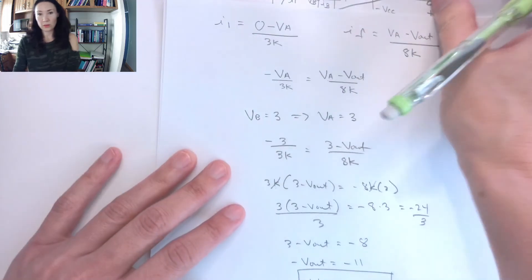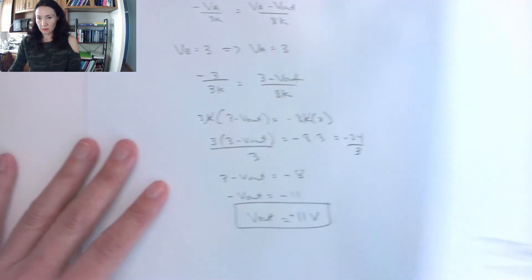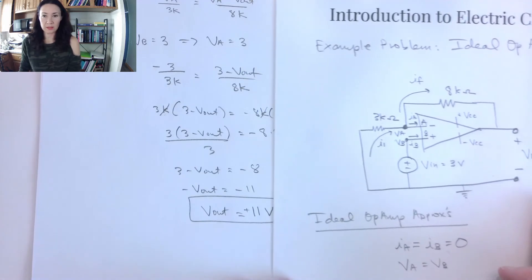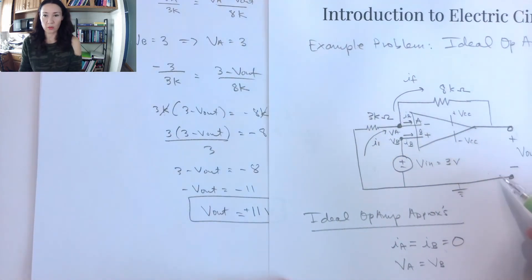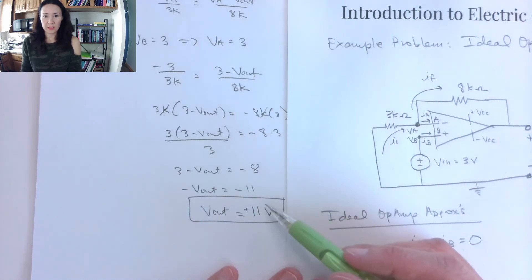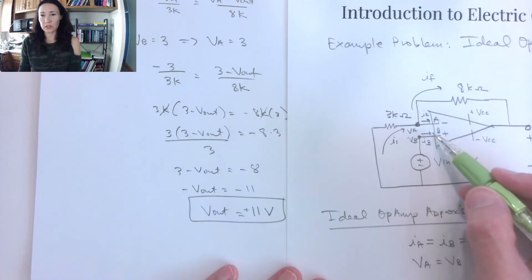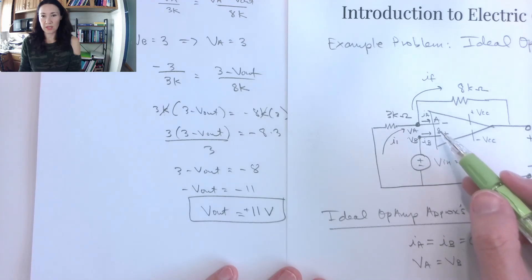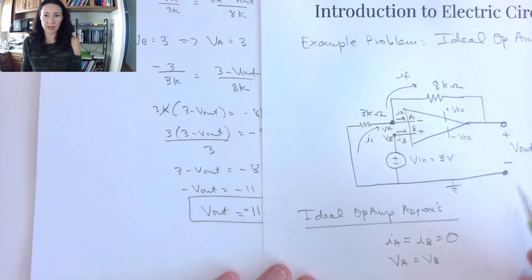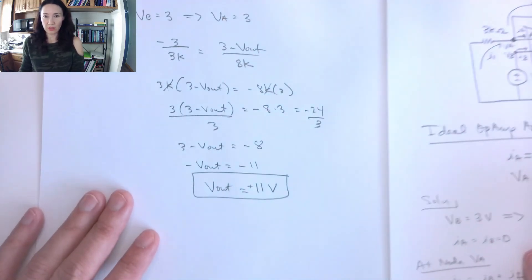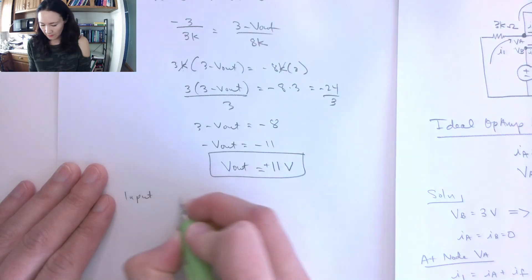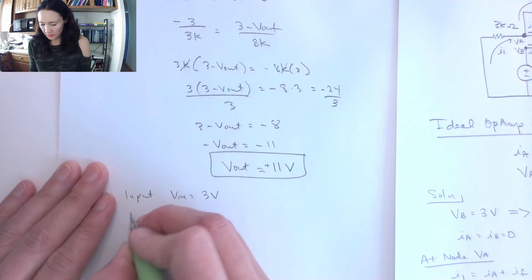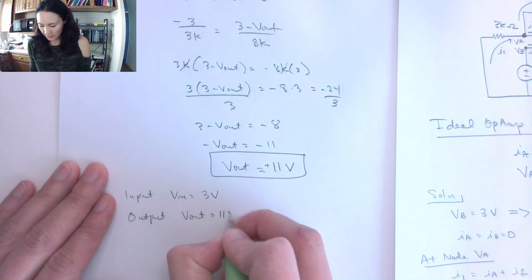So we used the ideal op-amp approximations to figure out what the voltage drop is across Vout, which goes from output terminal to ground. And this is a function of the voltage difference between these two. And since we have an input voltage of 3, we could actually calculate the gain because we know Vout here. So if our input Vin was 3 volts, and our output Vout is equal to 11 volts, then that means that the gain,